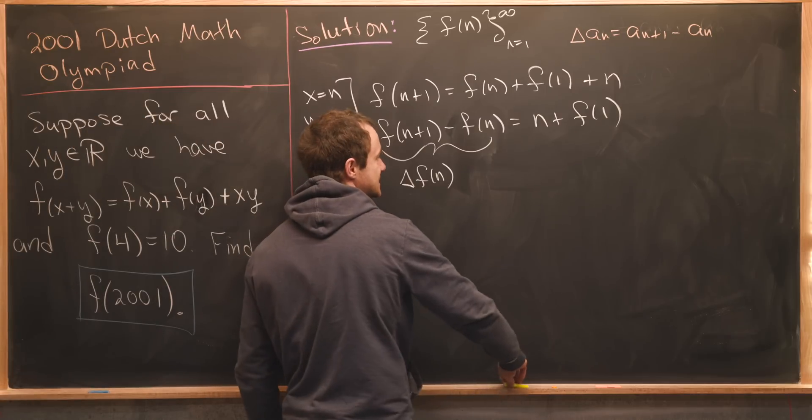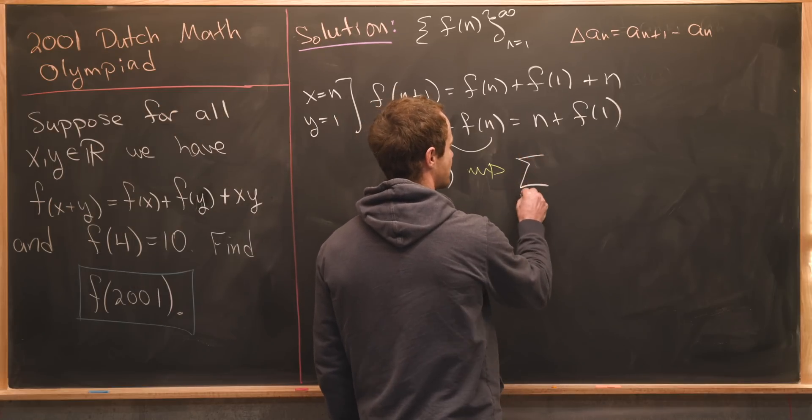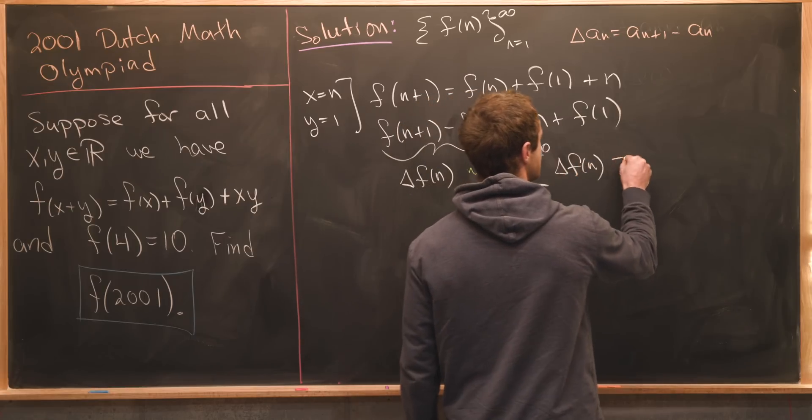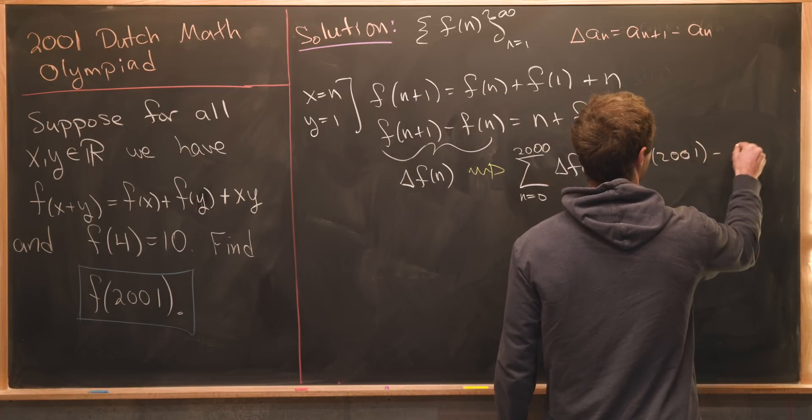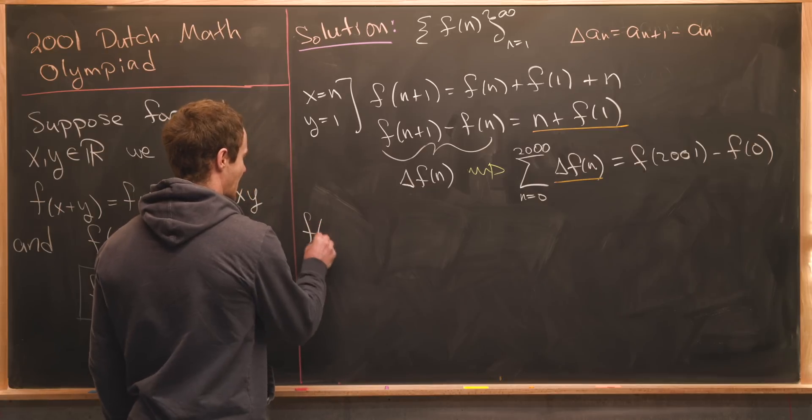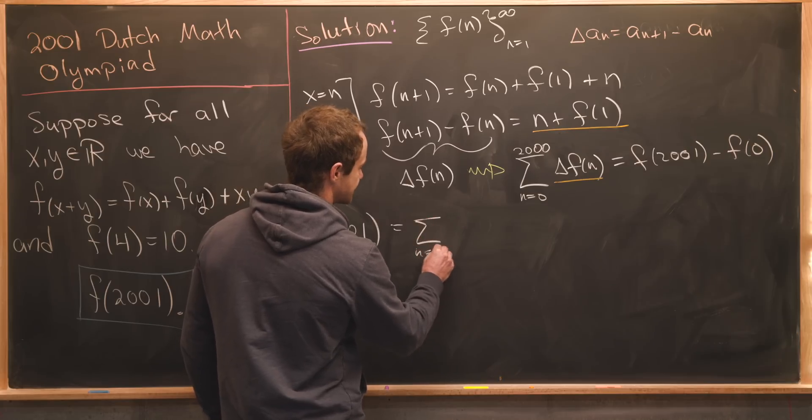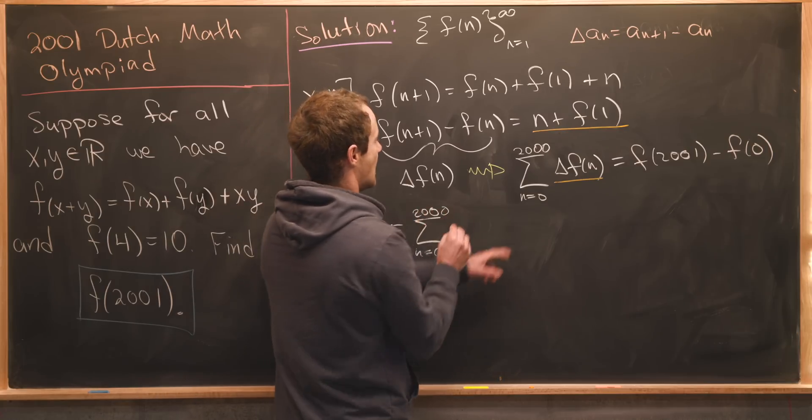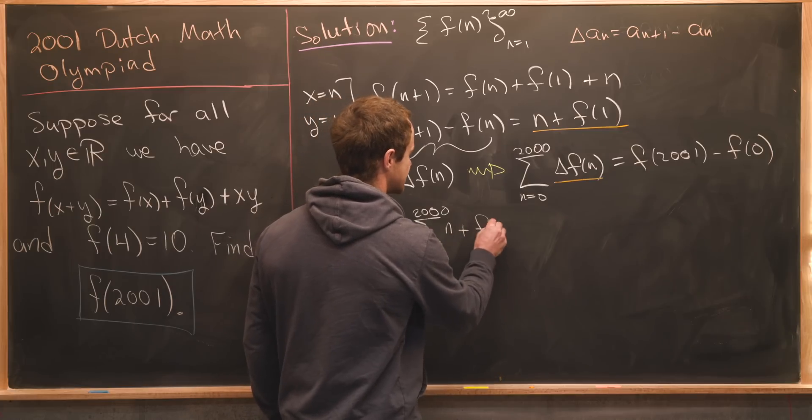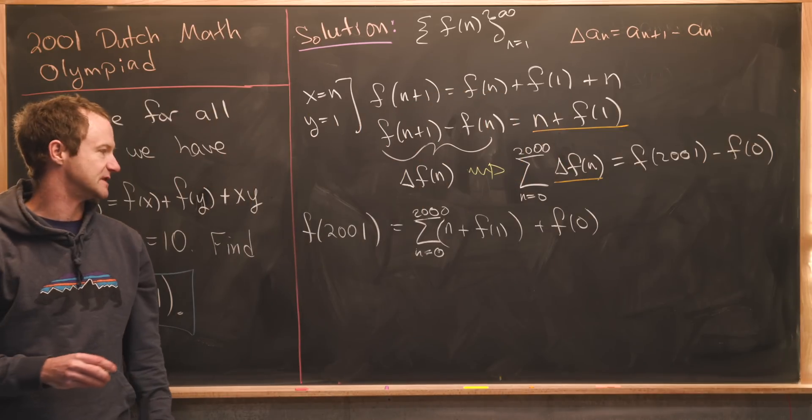Putting this into terms of the fundamental theorem of discrete calculus, that tells us that the sum from n equals 0 to 2,000 of our forward difference operator of f of n is equal to f of 2001 minus f of 0. Now starting from this which is our goal we have f of 2001 equals the sum as n goes from 0 up to 2,000 of this forward difference operator applied to f of n. But that's this guy up here so that's going to be n plus f of 1, and then we'll have plus f of 0, again just moving this minus f of 0 over.